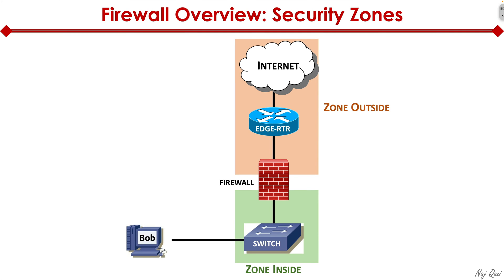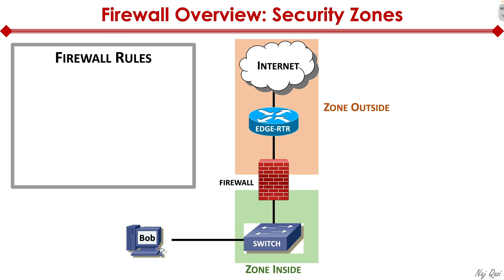Now let's look at another important concept when talking about firewalls: security zones. In this diagram, we have an internet connection coming into our edge router that's plugged into the firewall. The orange highlighted area is considered the outside zone. Then we have the firewall connected to a switch that is connected to a machine Bob is using — the green box at the bottom of the firewall is the zone inside. This gives us the ability to define different zones and assign different trust levels to those ports in order to handle that traffic.